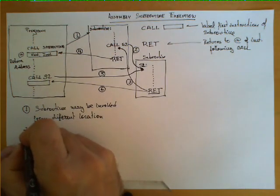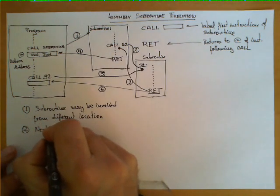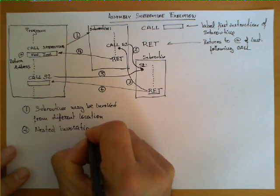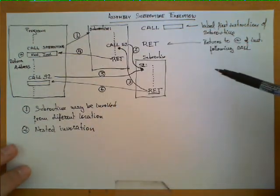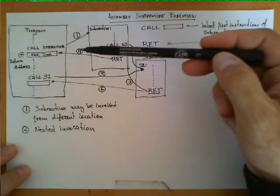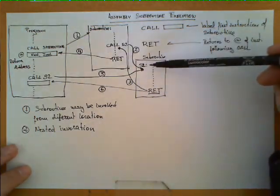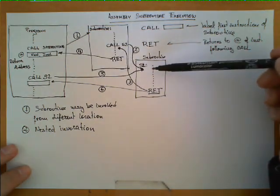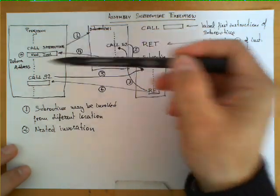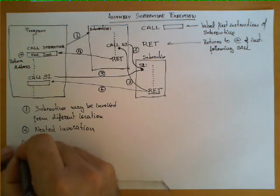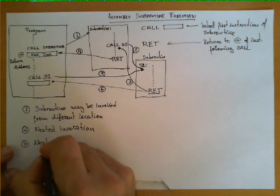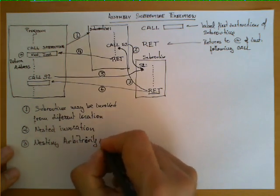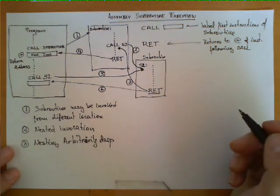This is also an example of another factor to observe: subroutines are sometimes invoked in a nested way. We need to understand this mechanism from the point of view of nested invocation. S2 was invoked inside the first subroutine, which itself was invoked inside the main program. Observation number three is that this nesting can be arbitrarily deep.